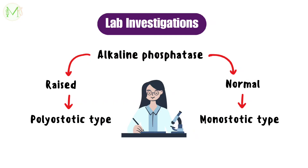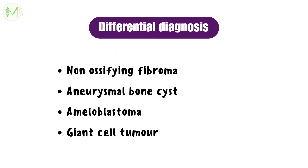Lab investigations reveal increased alkaline phosphatase level in the polyostotic type, whereas it remains normal in the monostotic type. Certain differential diagnoses of fibrous dysplasia based on radiographic and histological features are non-ossifying fibroma, aneurysmal bone cyst, ameloblastoma, and giant cell tumor.